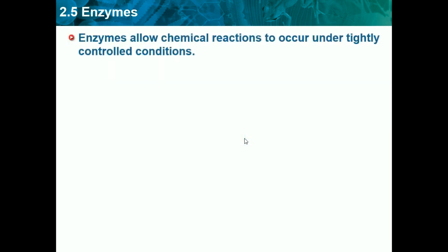Enzymes allow chemical reactions to occur under tightly controlled conditions. What are enzymes? Enzymes are catalysts in living things. If it's in a living thing, it's called an enzyme, but if it's not, it's just a catalyst. So if you're putting a catalyst into a chemical reaction in a lab, it's just called a catalyst.